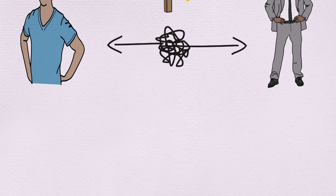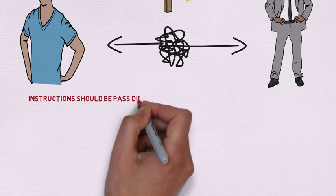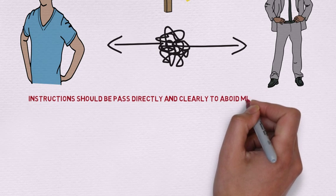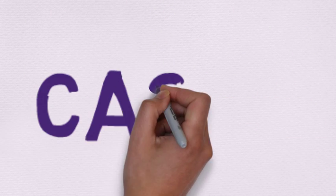Hence, this can also save Gary's time by not rushing to two places at a time. Therefore, instructions should be passed directly and clearly to avoid miscommunication from happening. Now we move to the last case.